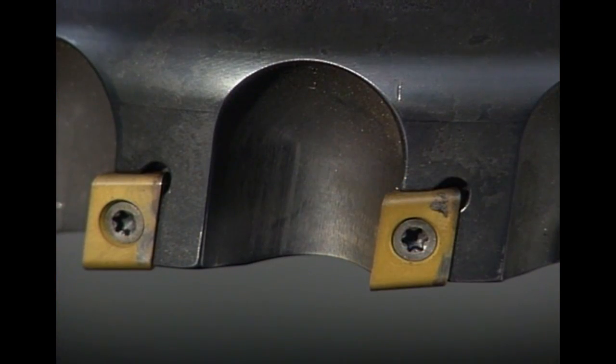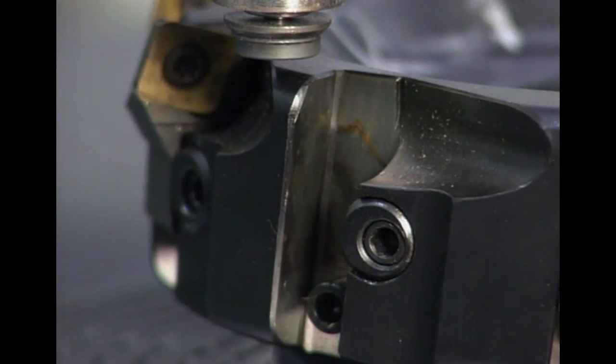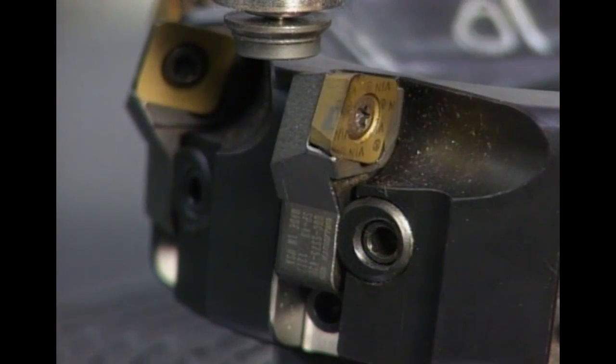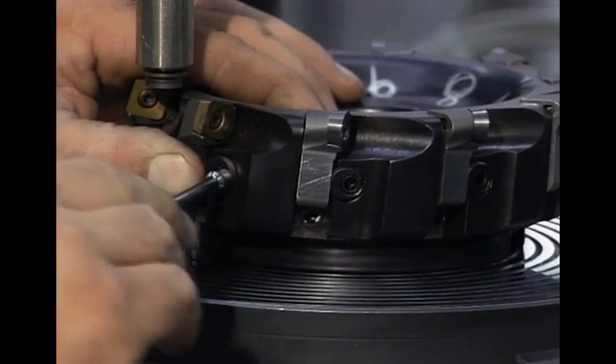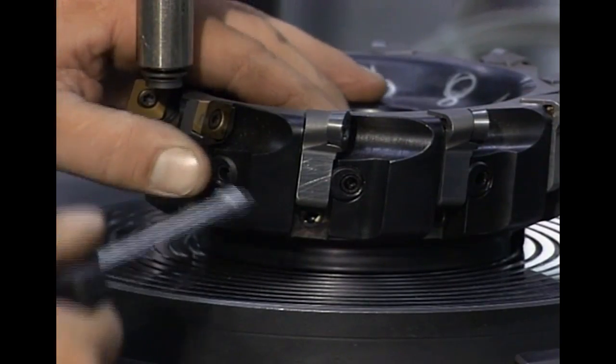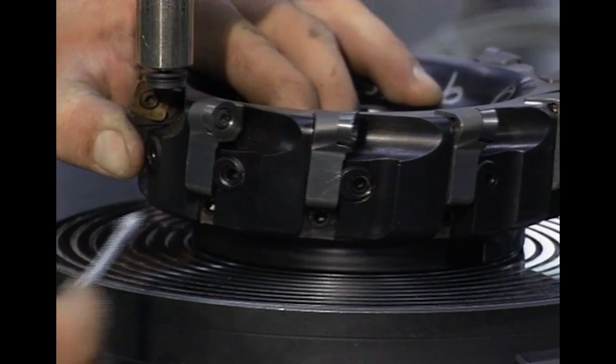Most face mills are designed with insert pockets that are fixed. Other cutters are modular and accept a variety of interchangeable insert cartridges that hold various insert designs and seat the inserts at different angles. This allows the orientation of the inserts to be varied using the same cutter body.